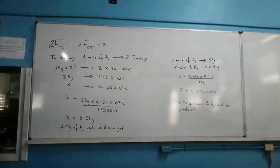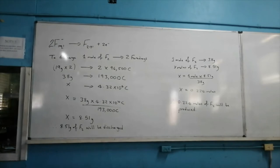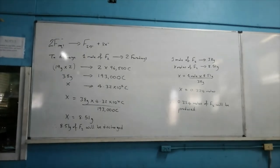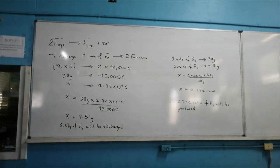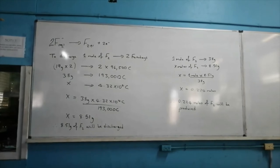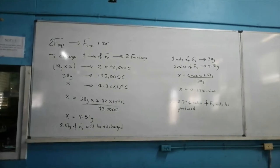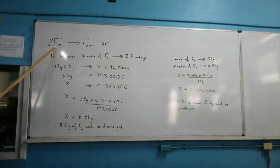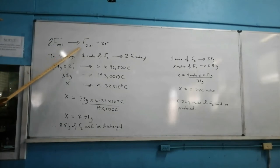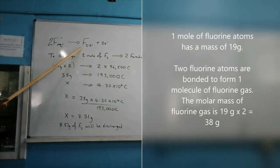The next question requires a calculation of the mass and number of moles of fluorine produced when 4.32 × 10⁴ coulombs of charge flows through the circuit. To discharge 1 mole of fluorine molecules requires the passage of 2 Faradays, because there are 2 fluorine ions and each ion gives up 1 electron to form 1 mole of fluorine gas.